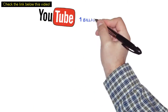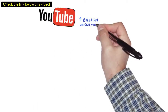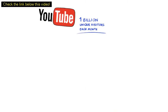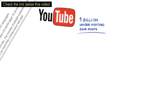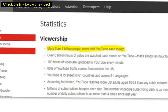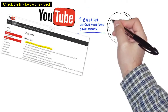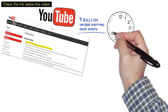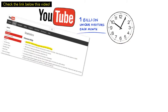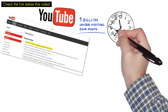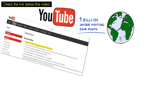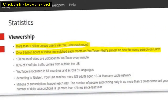Did you know that YouTube gets over 1 billion unique visitors each month to its website? Now you do. And did you know that over 6 billion hours of videos are being watched each month on YouTube? That's almost one hour for every person on Earth. Now you do.